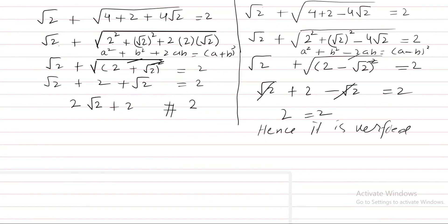The value X equal to 6 minus 4 square root 2 is the solution of the equation. This is the final solution.